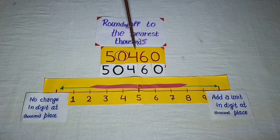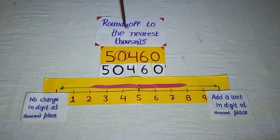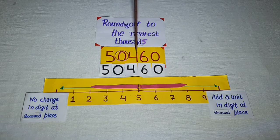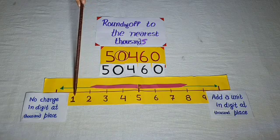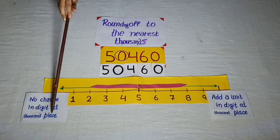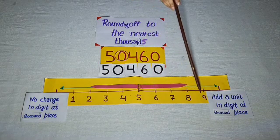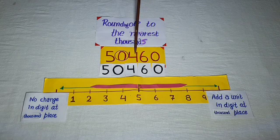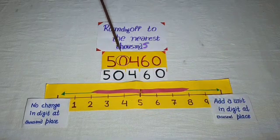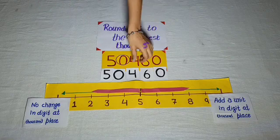The number is 50,460. When we do rounding to the nearest thousand, look at the place of hundreds. If the digit is 4, 3, 2, or 1 at the hundredths place, then there is no change in the digit at the thousandths place. If the digit is 5, 6, 7, 8, or 9 at the hundredths place, add a unit to the digit at the thousandths place. Here, digit 4 is at the hundredths place.